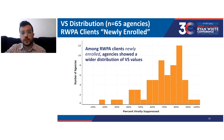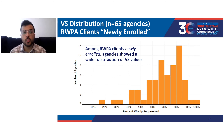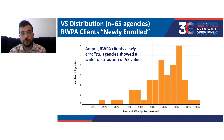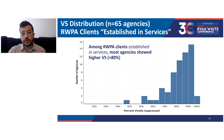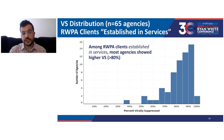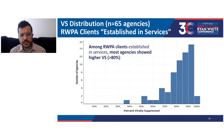For the distribution of viral suppression values among newly enrolled clients, agencies showed a wider distribution of viral suppression values compared to clients overall and compared to clients established in services. For the distribution of viral suppression values in clients established in services, most agencies showed higher viral suppression — greater than 80% of their established clients were virally suppressed — compared to clients overall and clients newly enrolled. This fits the expectation that clients established in services have had more time for agencies to address their needs.